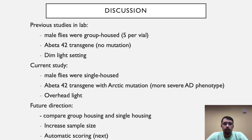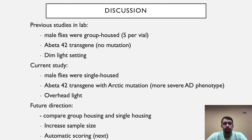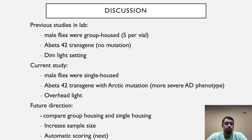When comparing our study to Lynn et al.'s group in 2017, there were three main differences: our male flies were singly housed compared to their group housing; our amyloid beta-42 transgene had an Arctic mutation while theirs did not; and we had an overhead light while they had a dim light setting. We believe the most important factor is that our male flies were singly housed, since male flies will still interact with each other in courtship behavior even without female flies present, meaning group housing could be a big factor. Future directions include comparing group housing versus single housing, increasing our sample size, and looking at automated scoring.